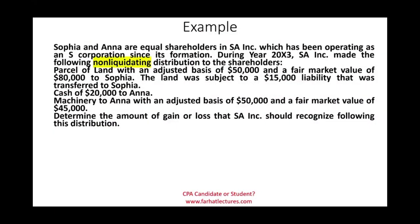Sophia and Anna are equal shareholders in SA Inc., which has been operating as an S corporation since its formation. During 20X3, the S corporation made the following non-liquidating distributions: land with an adjusted basis of $50,000 and a fair market value of $80,000 to Sophia, subject to a $15,000 liability transferred to Sophia; and to Anna, cash of $20,000 and machinery with an adjusted basis of $50,000 and a fair market value of $45,000. We need to determine the amount of gain or loss that SA Inc. would recognize on this distribution.